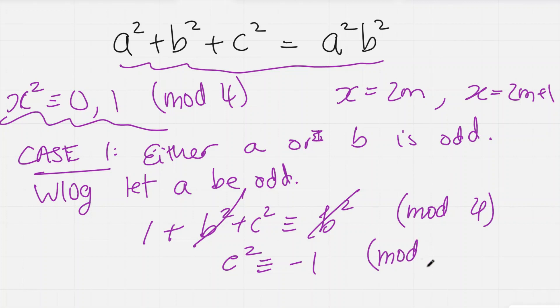And just cancelling the b² on both sides and bringing the 1 to the other side, we get c² is congruent to -1 mod 4. But this is impossible because c is an integer. We know integers—or the square of an integer—can only be 0 or 1 mod 4. It can't be -1. So that means that case 1 gives us no solutions.